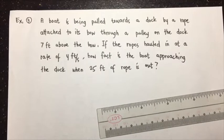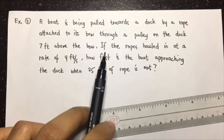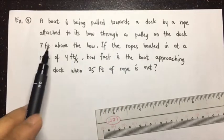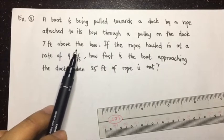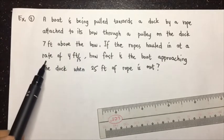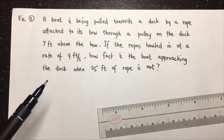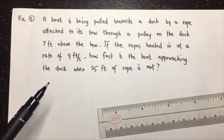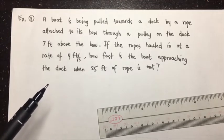For our third example, still on related rates: a boat is being pulled towards a dock by a rope attached to its bow through a pulley on the dock seven feet above the bow. If the rope is being hauled in at a rate of four feet per second, how fast is the boat approaching the dock when 25 feet of rope is out?